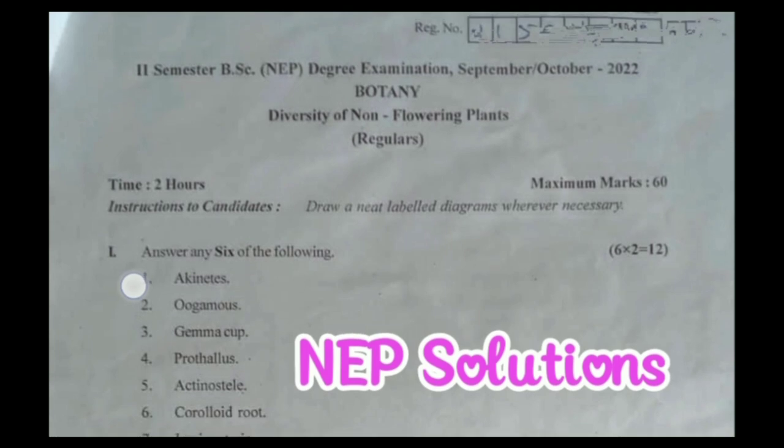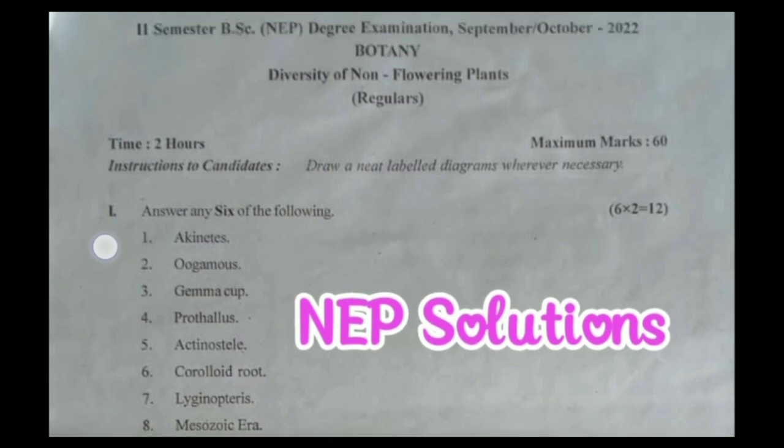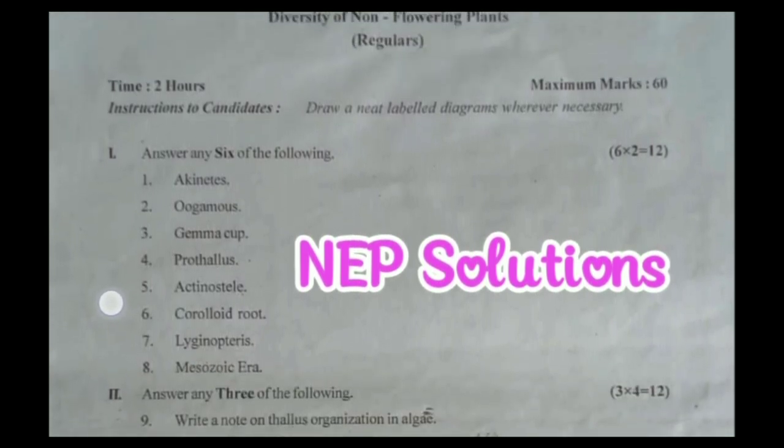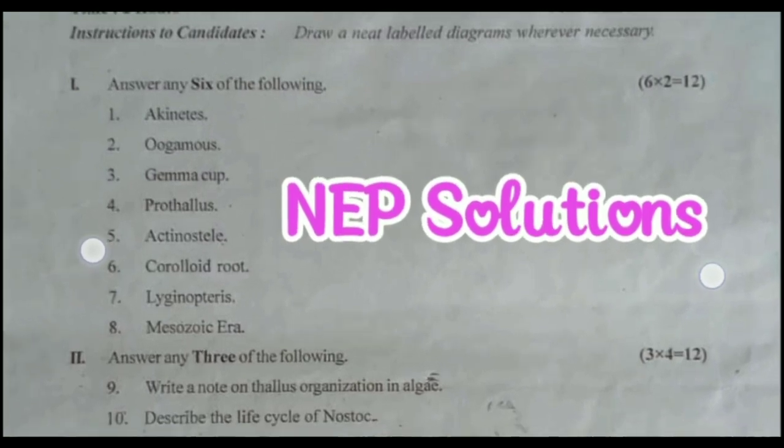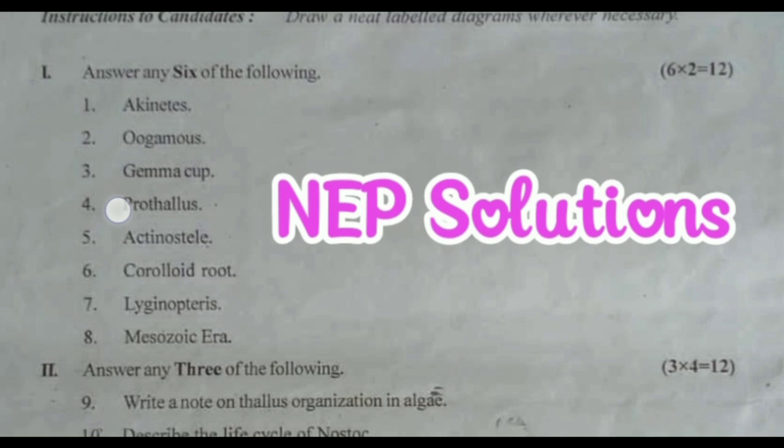What is diversity of non-flowering plants regular question paper? As you know, time is 2 hours, maximum marks is 60. First we will see 2 marks question. First we will answer any 6 of the following, 6 x 2 is equal to 12 marks.